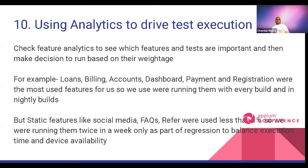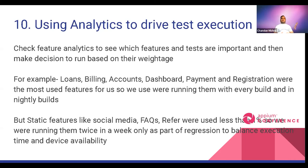The ninth optimization is using analytics to drive test execution. Don't run every test every time in every build. In our case, customers primarily use loans, billing accounts, dashboard, and payment registration. Features like FAQs, referral, and social media were used less than 1%. We ran the most important tests with every build, regression tests with the nightly build, and less critical tests weekly or bi-weekly.